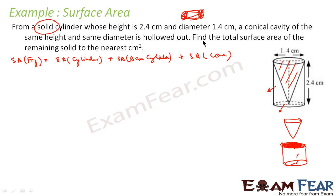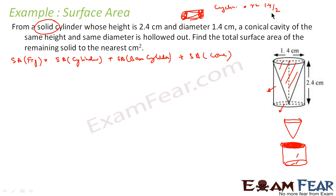To find the surface area of the cylinder, we need R and H. For the cylinder, radius R is 1.4 divided by 2 because diameter is 1.4, so R = 0.7. And height H is 2.4.